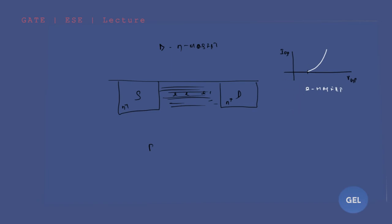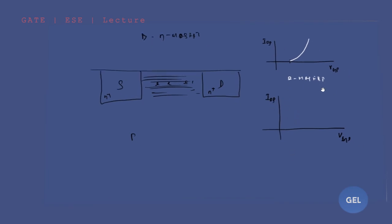In D-MOSFET, look here carefully — this is the VGS graph with its Y-axis. But here, even at zero input voltage, your current will have a value. That means even without applying any input voltage, you get current — because here we do not need to form the channel. The channel is already present. This is the concept of the fabricated channel in depletion mode MOSFET.